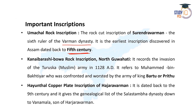Then comes the Kanai Borohibo Rock Inscription, which records the invasion of the Turkish Muslim army in 1128 AD. It refers to Muhammad bin Bakhtiar, who was confronted and defeated by the army of the Halstamba dynasty down to Bonmala, and Bonmala was the daughter of Hazara Burman. Then comes the Hauntal Copper Plate Inscription of Ratnapal. Then the Nagazori-Khanikargaon Stone Inscription, which is a fragmented inscription that provides a lot of historical evidence.